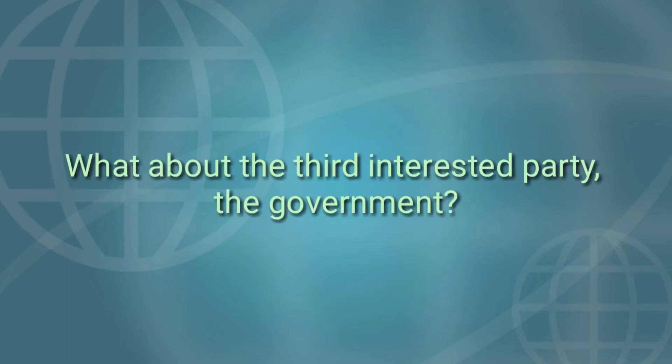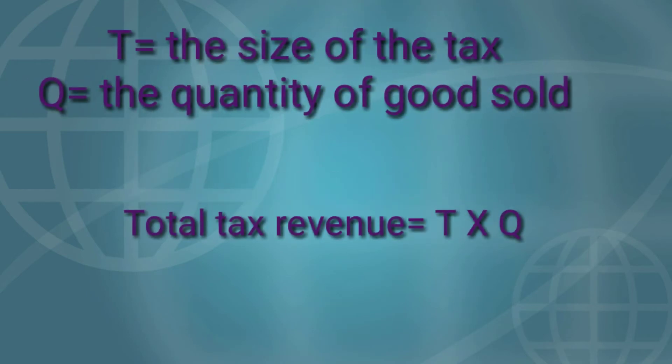What about the third interested party, the government? If T is the size of the tax and Q is the quantity of goods sold, then the government gets total tax revenue of T times Q. It can use this tax revenue to provide services such as roads, police, and public education. Therefore, to analyze how taxes affect economic well-being, we use tax revenue to measure the government's benefit from the tax. Keep in mind, however, that this benefit actually accrues not to government, but to those on whom the revenue is spent.